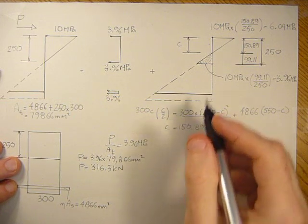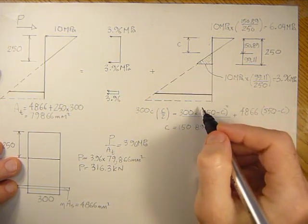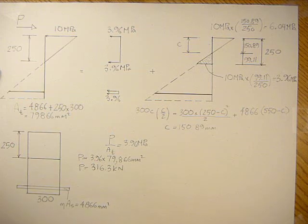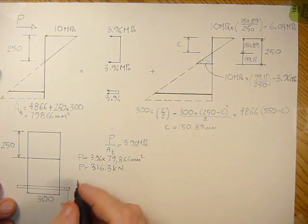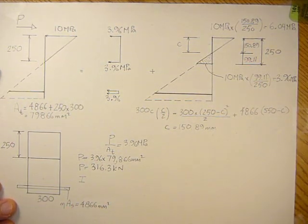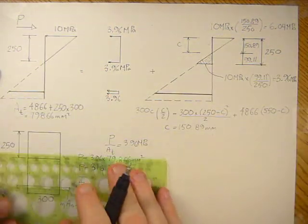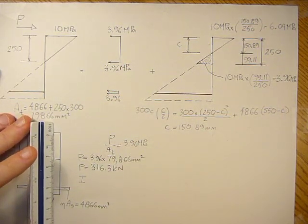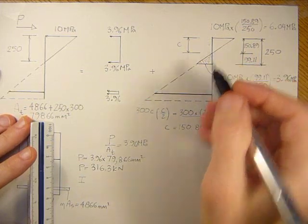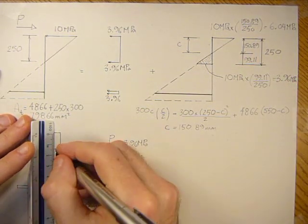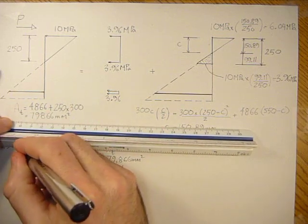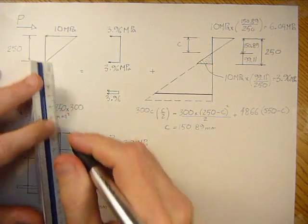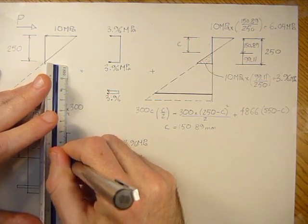Before we can find what the stress is using M over I, we need to find the inertia of the section. Instead of using the inertia about the neutral axis, we found that for this pure stress distribution the neutral axis is at 150 millimeters.